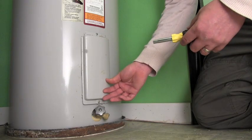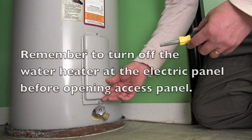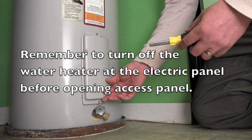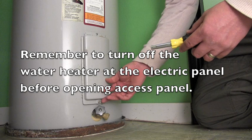Here we are at the bottom of my electric hot water tank. Remember to turn off the power at the circuit breaker to your hot water tank before opening the access panel.